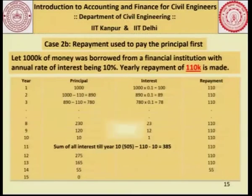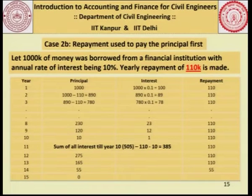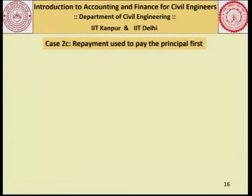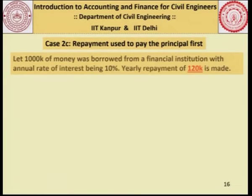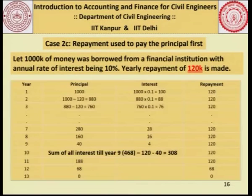If instead of 90,000 we use 1,10,000, we are able to complete the payment in 15 years, and if we pay 1,20,000, the loan can be serviced in 13 years.